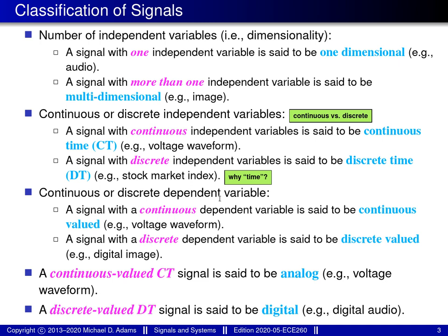We can also classify signals on the basis of whether the dependent variable — the value of the function itself — is continuous or discrete. A signal with a continuous dependent variable is said to be continuous-valued; an example is a voltage waveform where electric potential can vary over a continuum. A signal with a discrete dependent variable is said to be discrete-valued; a classic example is digital data, which by definition only takes on certain prescribed values. If a signal is both continuous-valued and continuous-time, we call it an analog signal. If it is both discrete-valued and discrete-time, we call it a digital signal.